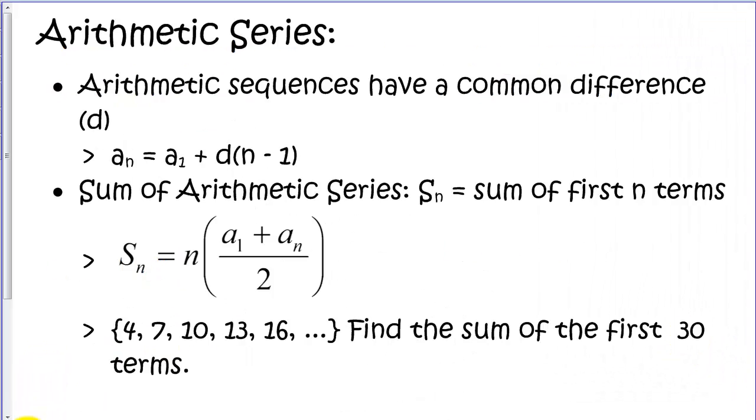We've talked about sequences. Now let's talk about series. A series is the sum of a bunch of terms. In this case, a sum of terms that are arithmetic, meaning they have a common difference. This is our formula for the nth term. And to calculate the finite sum of the first n terms of a sequence or series, we can use this formula here. What we're doing is averaging the first and last term, and then multiplying that by the number of terms. We'll look at some examples on the next page.